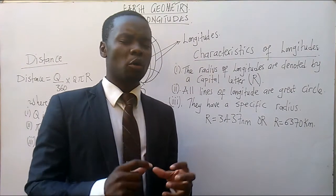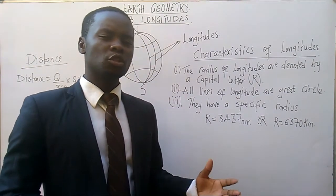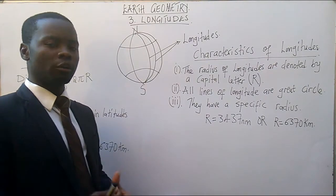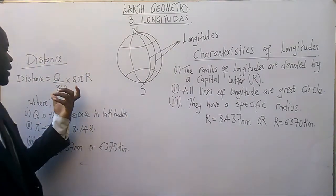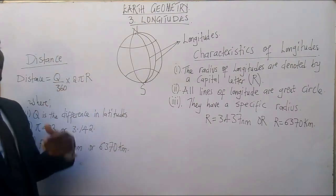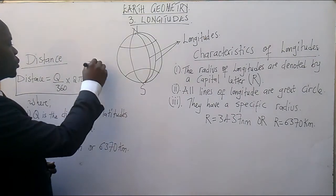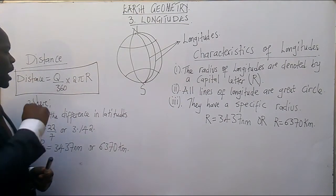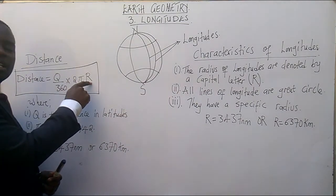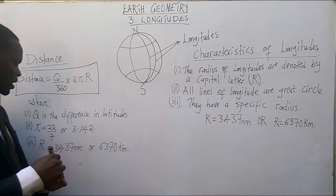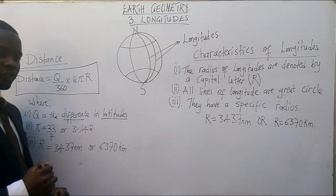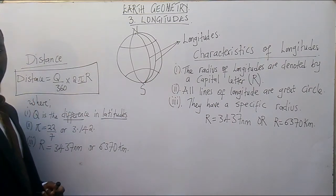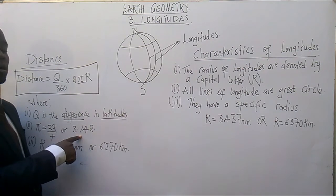Now let's look at the distance formula used when calculating distance along longitudes. The distance formula is: theta over 360, times 2πR. This is the formula you must use to calculate distance along a longitude. Theta is the difference in latitude, and pi is either 22/7 or 3.142.